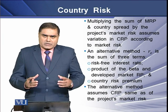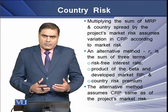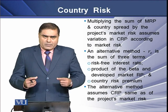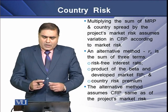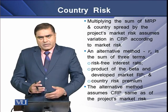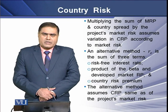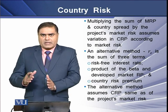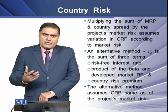We now have the sum of two terms — the market risk premium and the country spread. When we multiply this sum with the project's market risk (beta), this multiplication assumes variation in the country risk premium according to the market risk in that particular country.